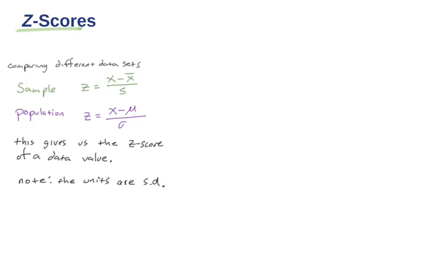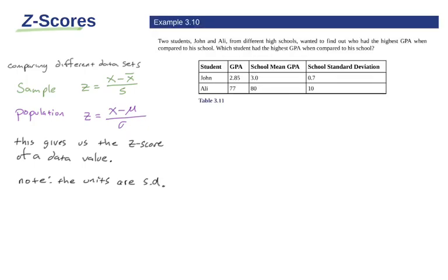If I want to compare a history exam with a math exam, the points aren't exactly the same. I want to see my relative standing — how I did in each specific class — and then compare those two. The units of a z-score are in standard deviations, so it tells us how many standard deviations away we are. Let's look at an example.